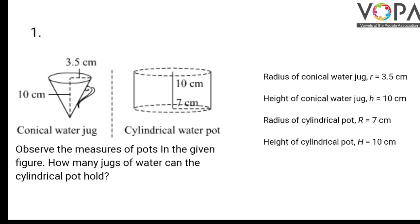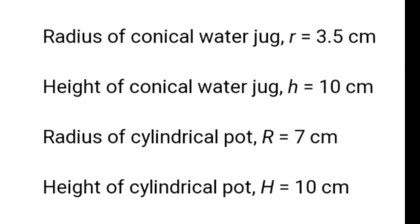Here radius of the conical water jug, small r, is 3.5 cm. Height of conical water jug h is equal to 10 cm. Radius of cylindrical pot R is equal to 7 cm. Height of cylindrical pot H is equal to 10 cm.